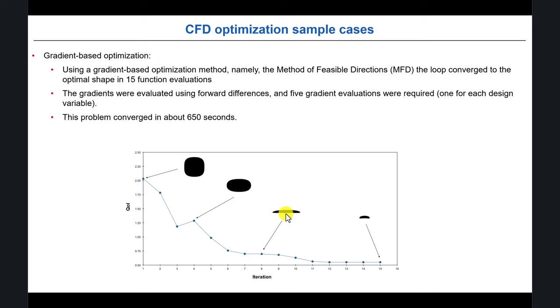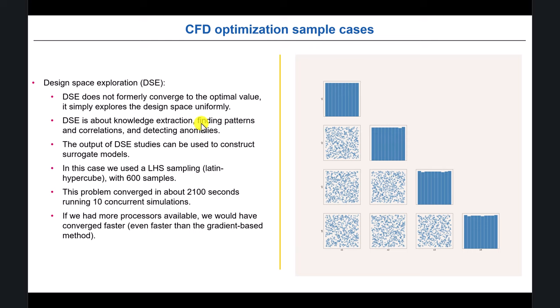Using a gradient-based method — in particular the method of feasible directions, a classical method — we arrive at the optimal shape in 15 iterations, which is quite fast. We use gradients based on forward differences. We're not using a turbulence model and the mesh is quite coarse, but it's sufficient to demonstrate the methodology.